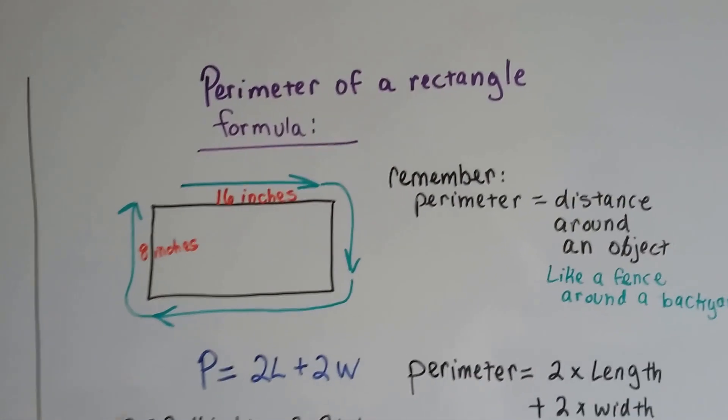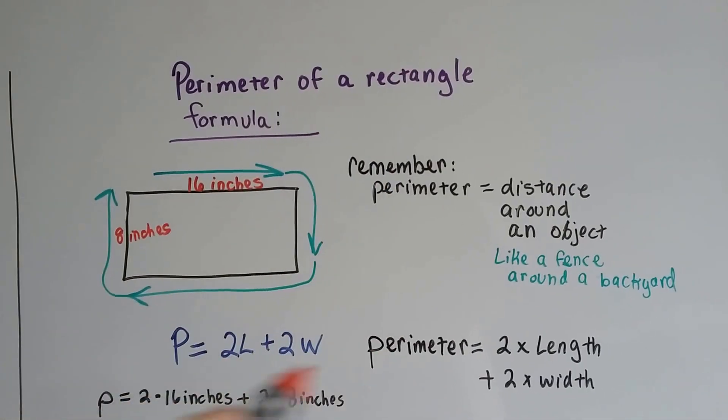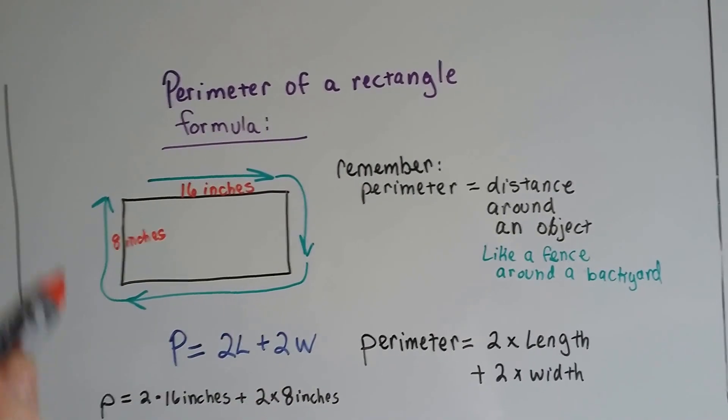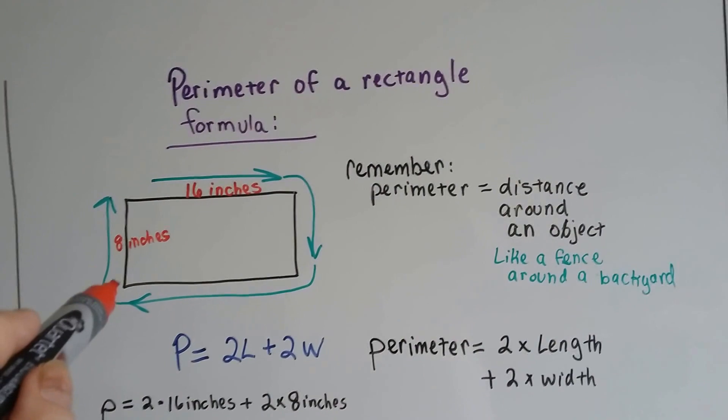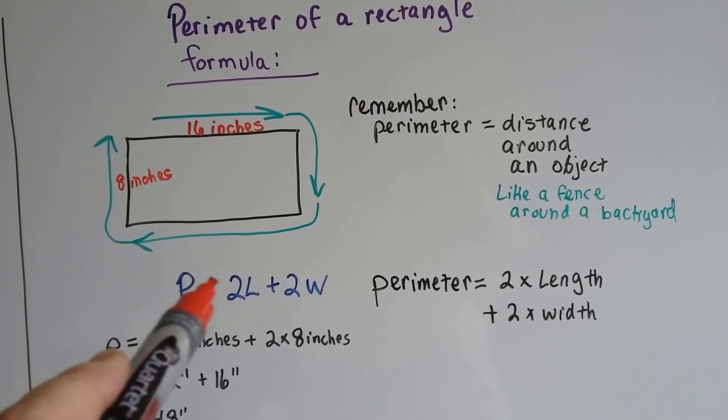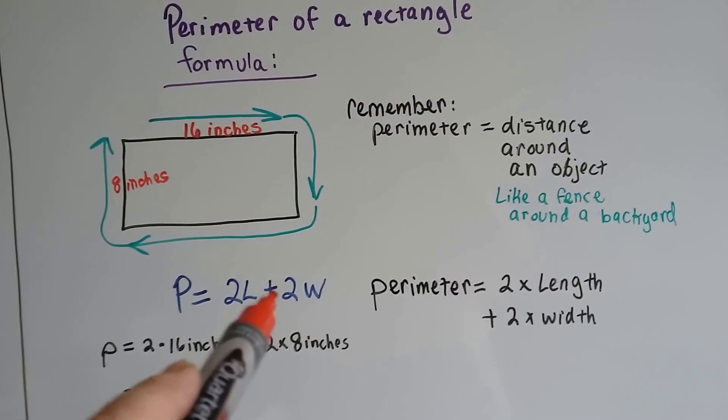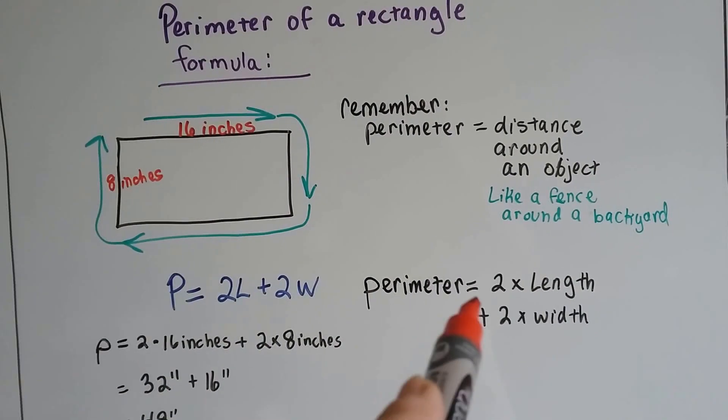Perimeter of a rectangle formula. Remember, perimeter is the distance around an object, like the fence around a backyard. So if the length is 16 inches, and the width is 8,